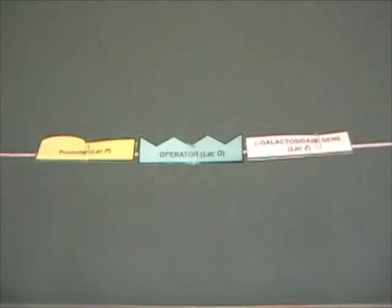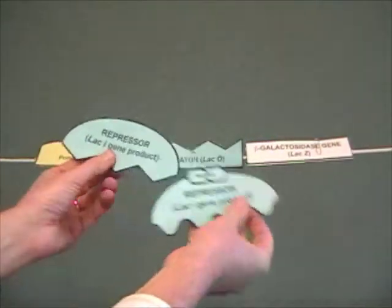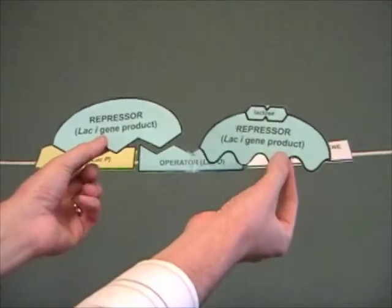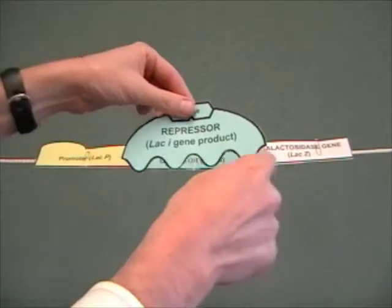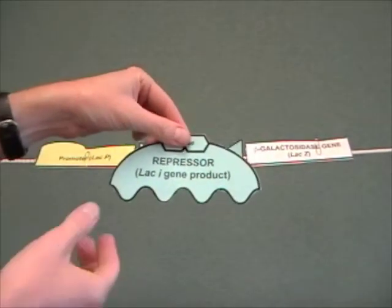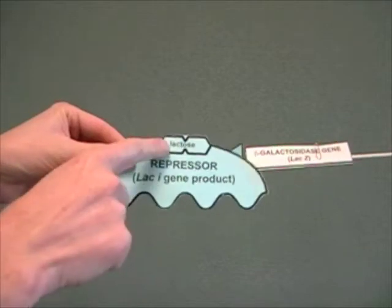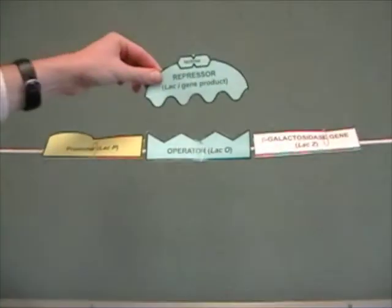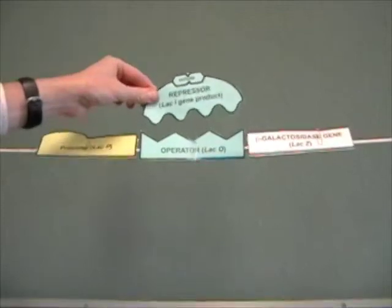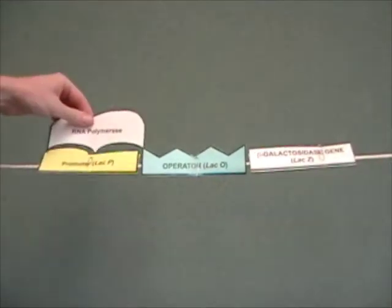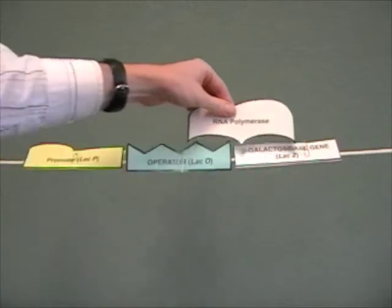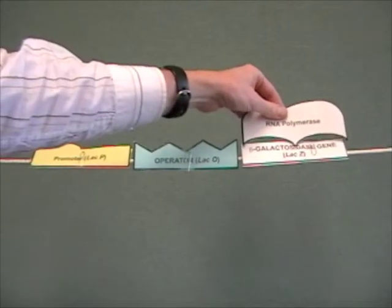However, if lactose is present, the conformation of the repressor changes. Notice how here it's got one shape. Here we have a different shape at the bottom showing that the conformation of this protein has changed. And that's induced by the binding of lactose. So, now, the operator can no longer bind onto the repressor and the repressor is going to diffuse away. And now, RNA polymerase is free to move across this region and you get expression of beta-galactosidase.